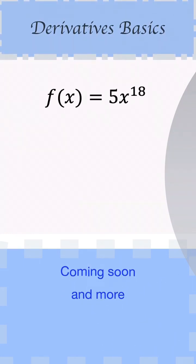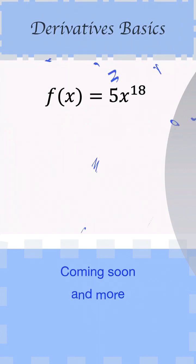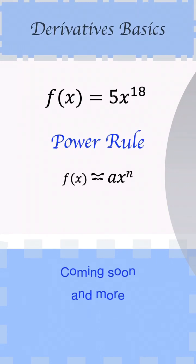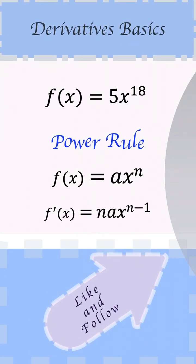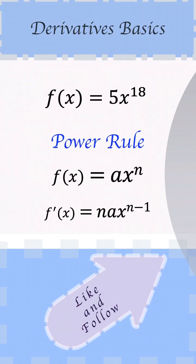Here they are saying that f(x) is equal to 5x to the power 18. According to the power rule, when we have f(x) equals a times x to the power n, f prime of x is going to be equal to—we drop down the n, multiply it by a, and remove 1 from the power. It becomes n minus 1.